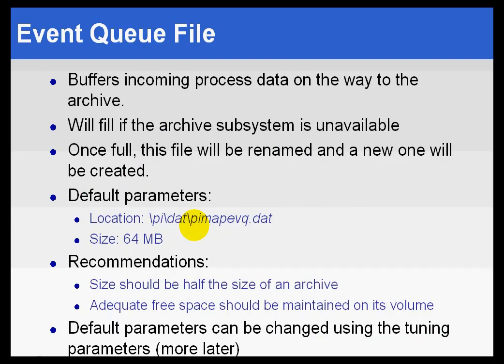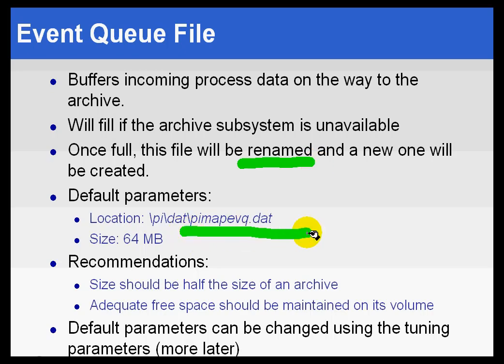There are certain behaviors of this file you should know about. Once that file is full in memory, we go ahead and rename that file and then create a new one. The default location of this is PymapEvq.dat. I stated that incorrectly earlier in the course — I called it PIEventQueue.dat, which is actually the old name. It is now currently called PymapEvq.dat.